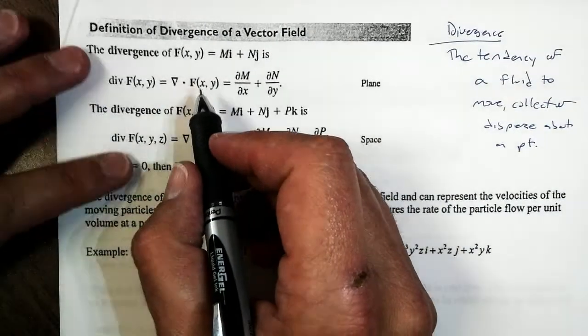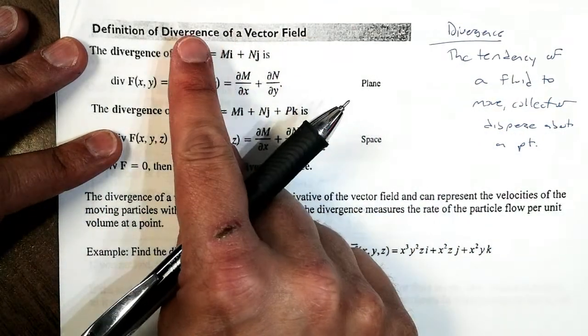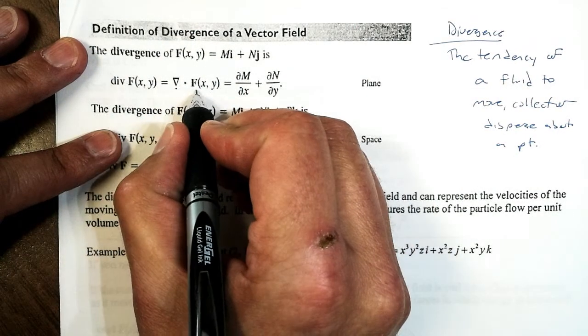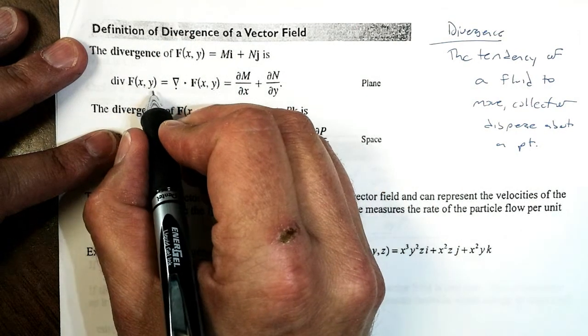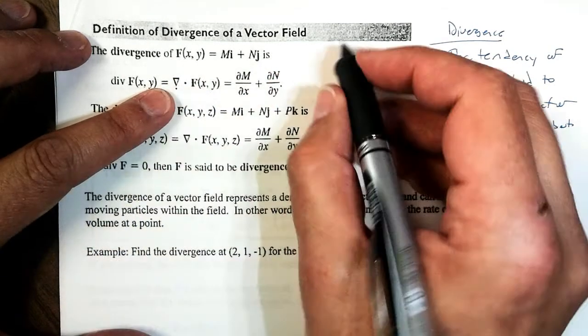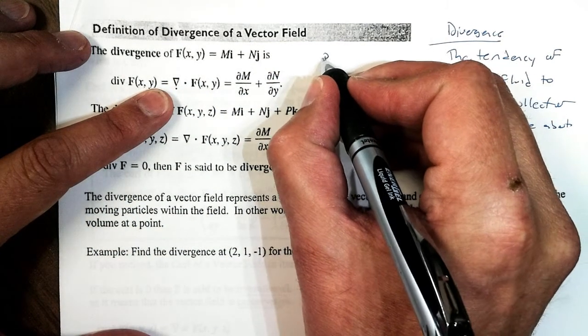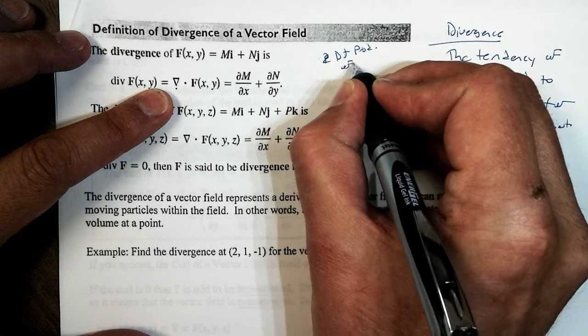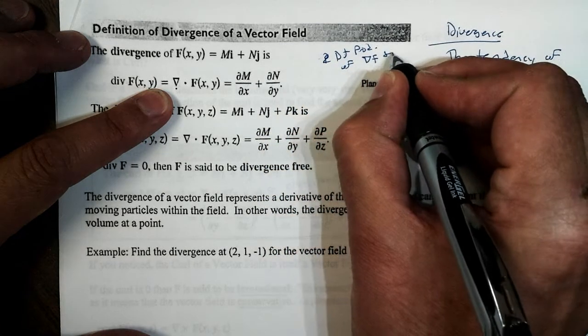So how do we get divergence? Well, to get the curl, we took the cross product of the gradient and the vector field. To get divergence, we're going to take the dot product. So, now we're going to look at the dot product of the vector field and the gradient itself.